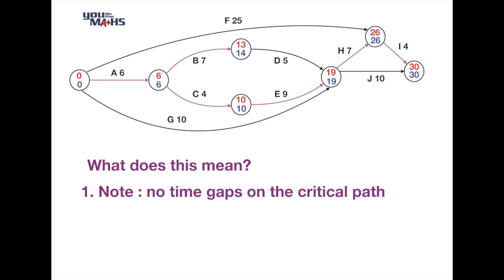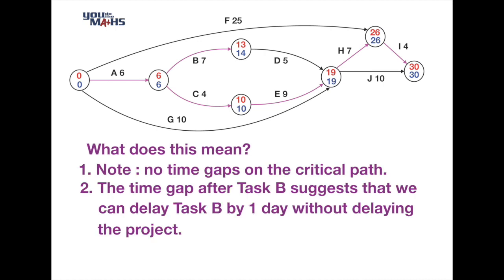Having two numbers in each circle indicates the time gaps available. On the critical path - A, C, E, H, and I - the circles show no gap between the forward (red) number and the backward (blue) number. The red number is the best time to reach that node; the blue number is the latest time we must leave. After task B, the forward time is 13 and the backward time is 14, indicating one day of slack - task B can be delayed by one day without affecting the project completion time.